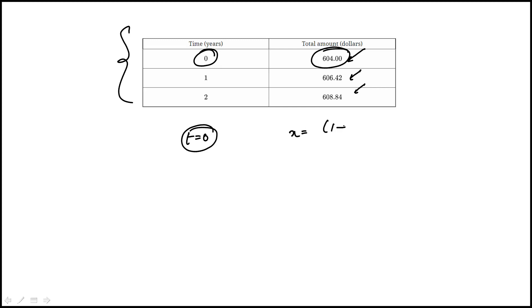If we replace it in choice A, this would just be 1, which doesn't work. Same thing with B because 1 plus 0.004 to the power 0 is 1 again.